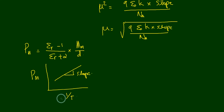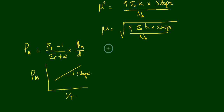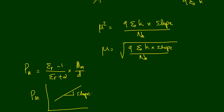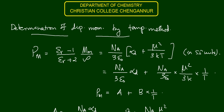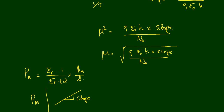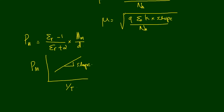For various temperatures, we measure the molar polarization Pm values by looking at the dielectric constants, and from those we get the dipole moment value. This is called the temperature method for the determination of dipole moment. I hope you understood this. If you have any doubts, please don't hesitate to ask. Thank you for watching and stay tuned.